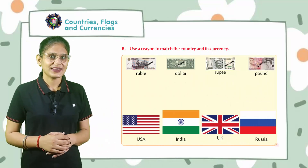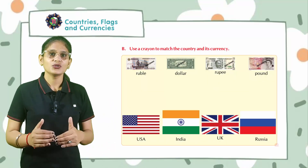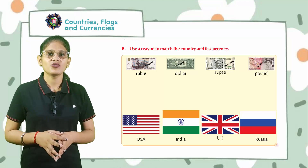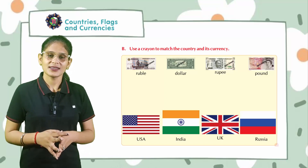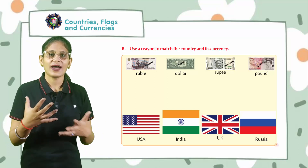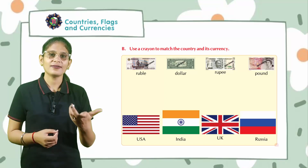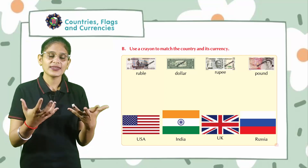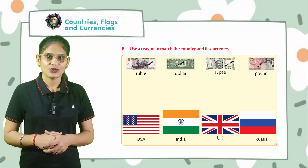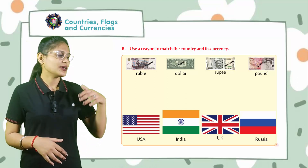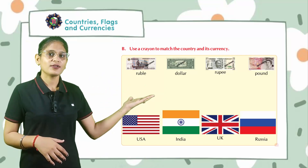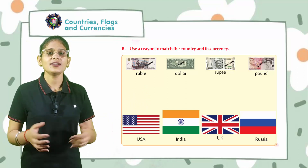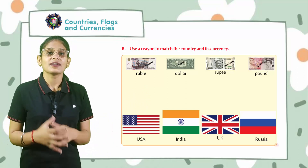Look at the B part. Use a crayon to match the country and its currency. You have to match the countries with their currencies. You can match it by yourself, students, because we already discussed about these things.